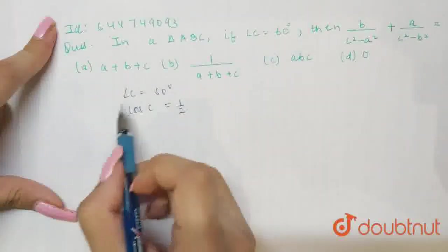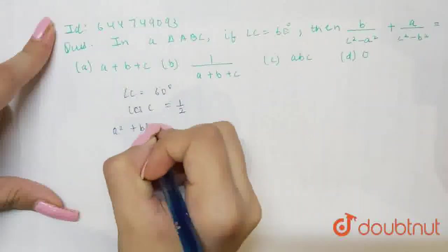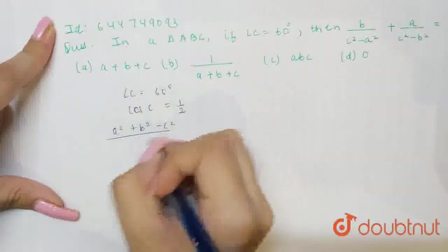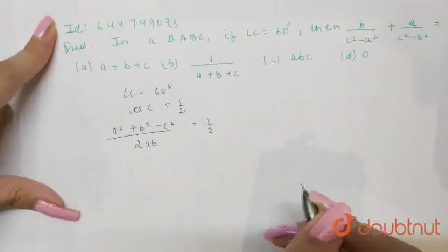So, if I say value of cos c, this will be a square plus b square minus c square by 2ab by using the formula. This is equals to 1 by 2, right?